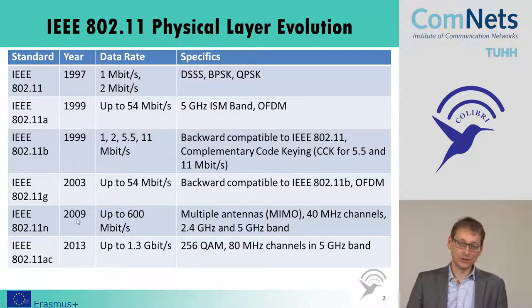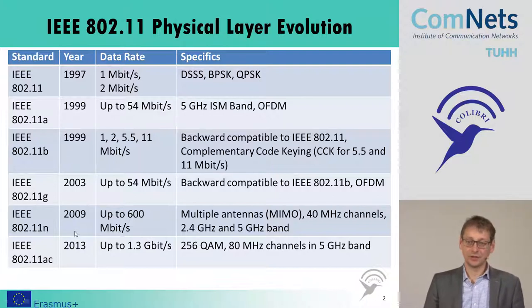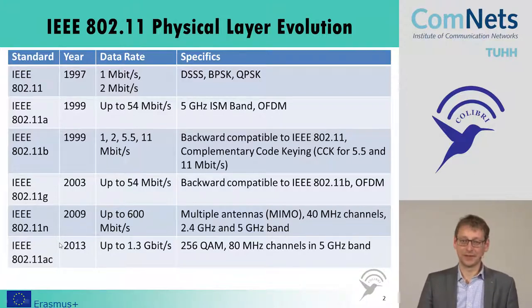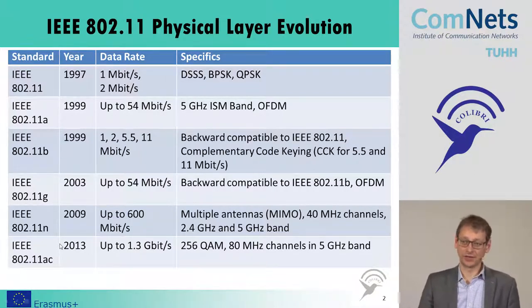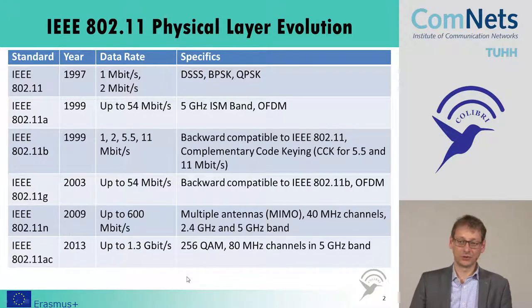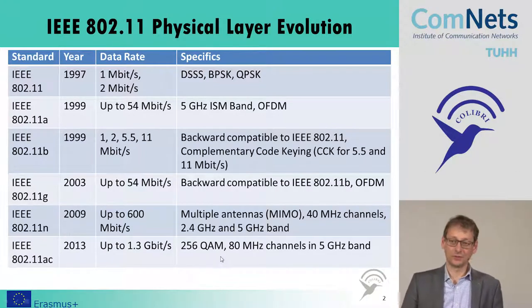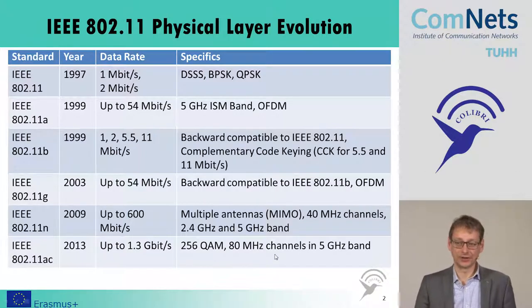Just two years ago, 802.11ac was introduced, offering data rates up to 1.3 gigabit per second. It uses 256-QAM and 80 MHz channels in the 5 GHz band.